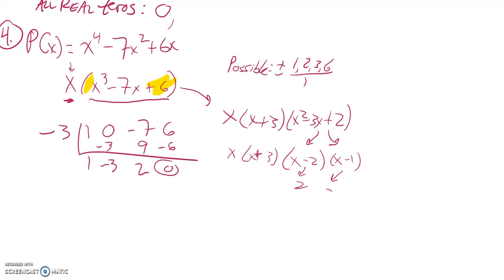So that actually gives me my other two zeros. What makes this a 0? 2. What makes this a 0? 1. So 0, negative 3, 2, and 1. And there's my possible zeros for that number 4.